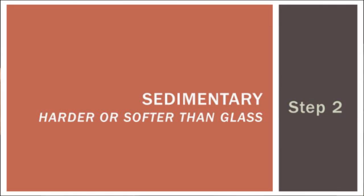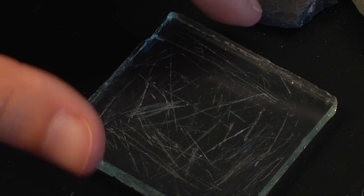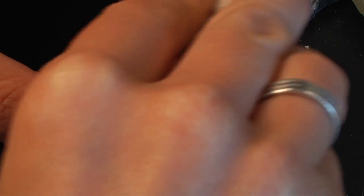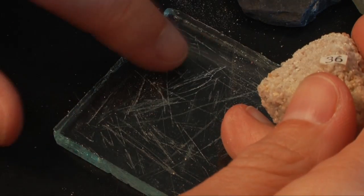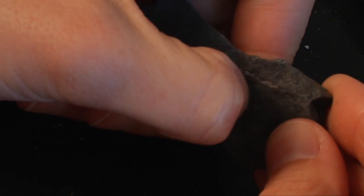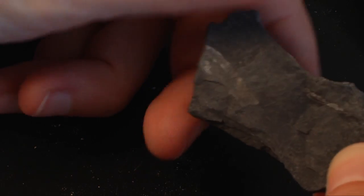The next thing you'll do is test the sample to see if it is harder or softer than glass. Same as identifying minerals, hold your glass plate on the table, take your rock sample, scratch it on the glass, and then see the scratch that was left behind. You can also test whether it is harder or softer than your fingernail by scratching the rock and seeing if any of it came off on your finger — if it did, that means it's softer.